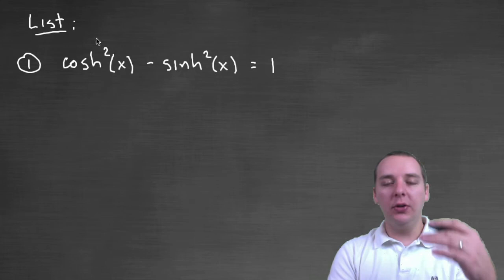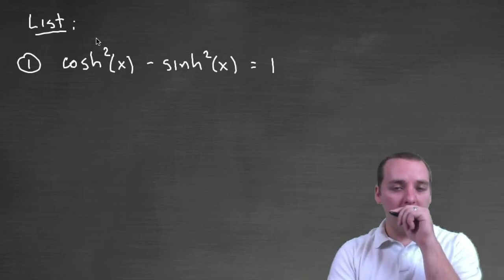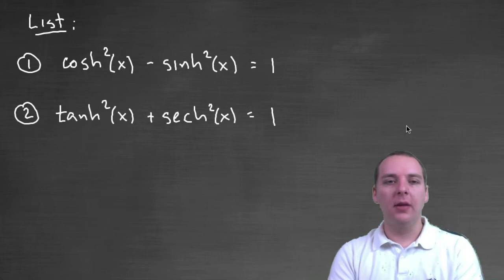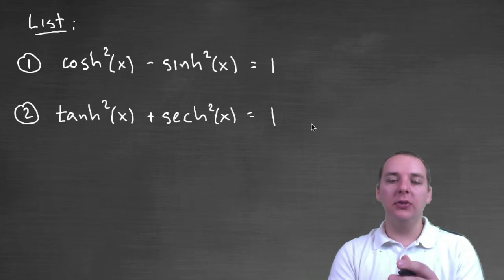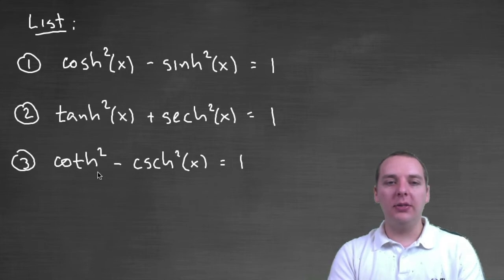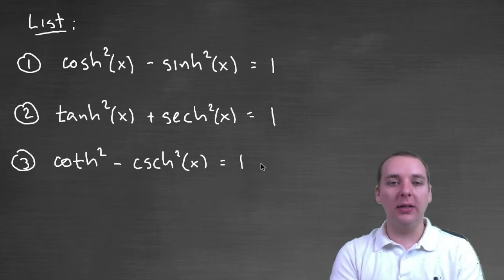So here we go with a list, and you could prove every one I'm about to show you in a similar fashion, but obviously you can tell this would take a very long time if we did that for all the ones that are remaining. So here's a list: hyperbolic cosine squared minus hyperbolic sine squared equals one, hyperbolic tangent squared plus hyperbolic secant squared equals one. And it's not a coincidence, you'll notice a lot of similarities to some close relative trig identities. Hyperbolic cotangent squared minus hyperbolic cosecant squared equals one. Again there's a close trig identity relative to this one.